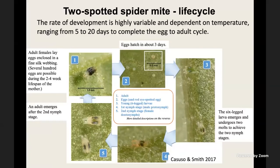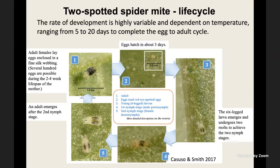The rate of development for two-spotted spider mites is highly variable and dependent on temperature, ranging from 5 to 20 days to complete their cycle from egg to adult. Females have about a two-to-four week lifespan and can lay several hundred eggs during that time, which are enclosed in fine silk webbing. Eggs hatch in about three days; six-legged larvae emerge and undergo two more nymphal stages before adults emerge.